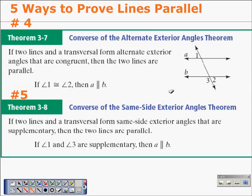Finally, we have the converse of the same side exterior angles theorem, which states: if two lines and a transversal form same side exterior angles that are supplementary, then the two lines are parallel. From the diagram, if angle 1 and angle 3 are supplementary, then line A is parallel to line B.